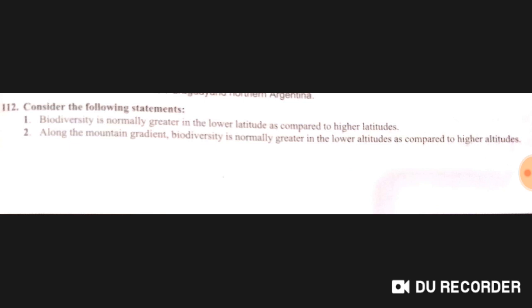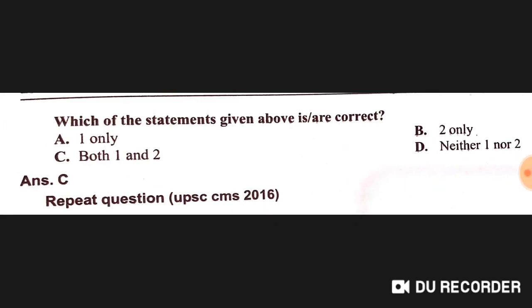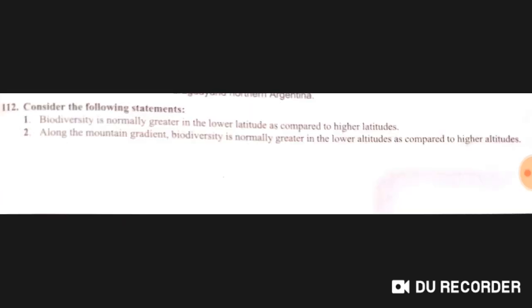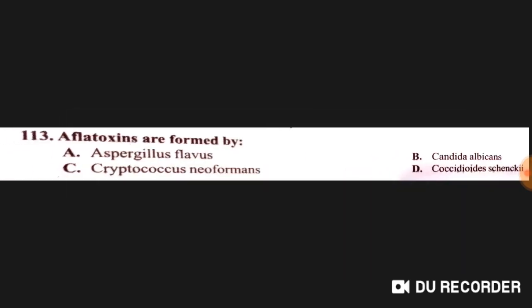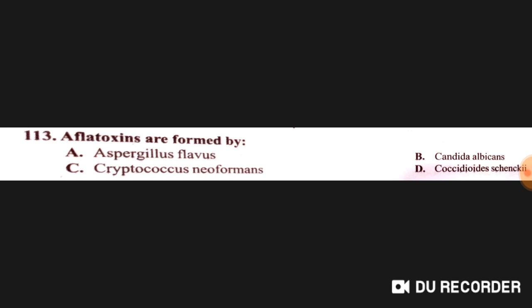Biodiversity is normally greater at lower altitudes compared to higher altitudes along a mountain gradient — both statements are correct. Aflatoxins are formed by Aspergillus flavus — option A is correct.